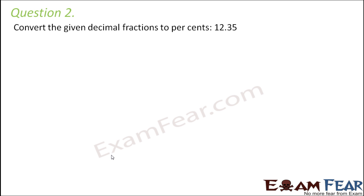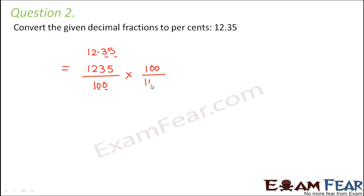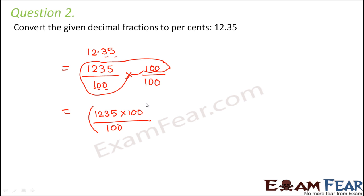Question number 2: Convert the given decimal fraction to percent — that is 12.35. First, let us write this decimal number in fractional form: 1235 divided by 100. Why two zeros? Because there are two digits after the decimal point. Now we have a fractional number, so we repeat the same process — multiply the numerator and denominator by 100. This becomes 1235 into 100 divided by 100 percent, so 100 cancels out and the answer is 1235 percent.